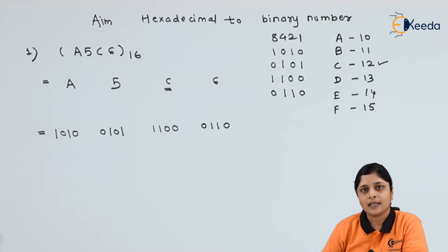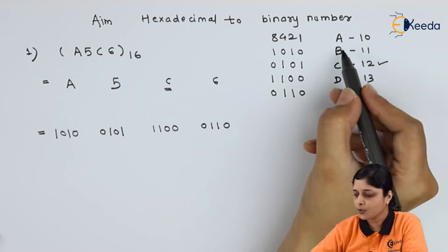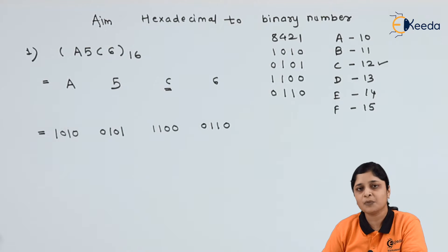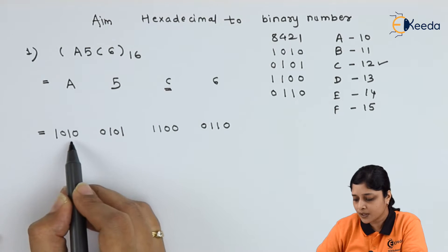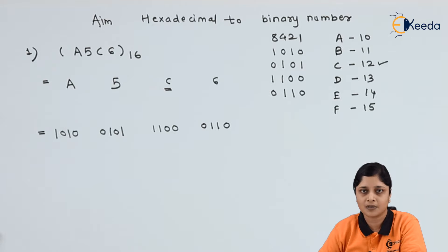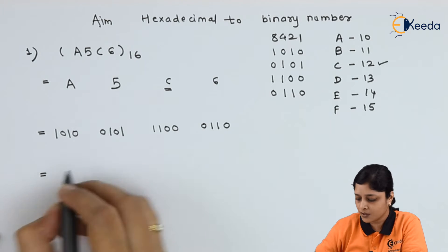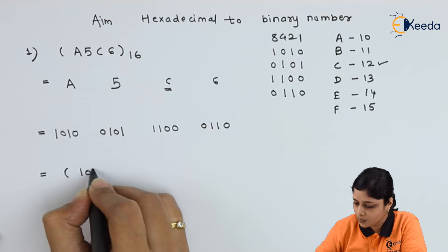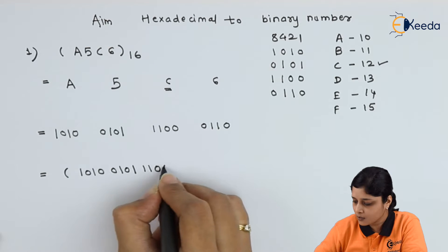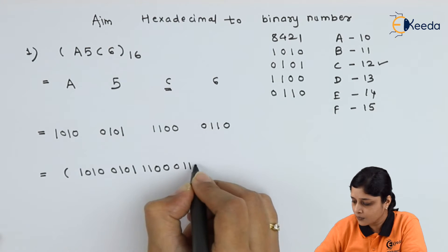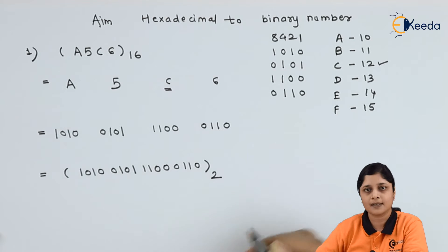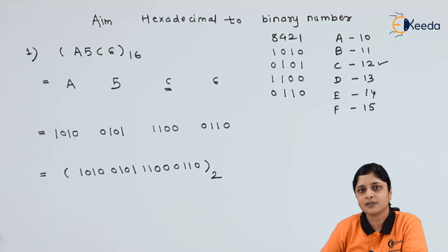You should know all the terms and how to convert to binary. Because this is a hexadecimal number system, 4 bits are used to represent each digit. The final answer is 1010 0101 1100 0110 to the base 2. Don't forget to mention the base — the radix for binary is 2.